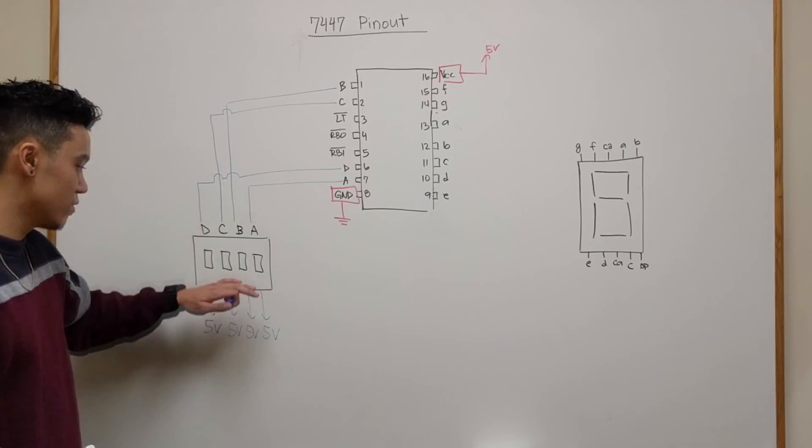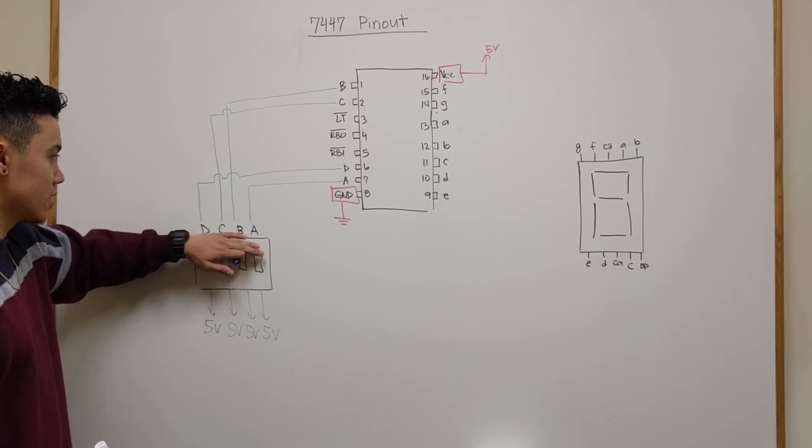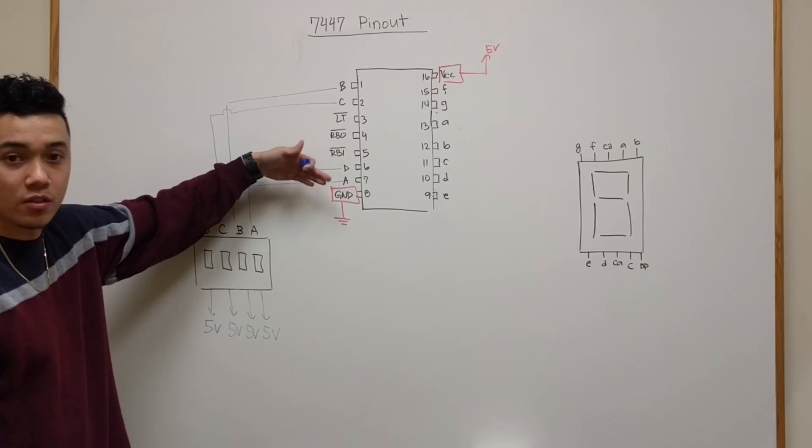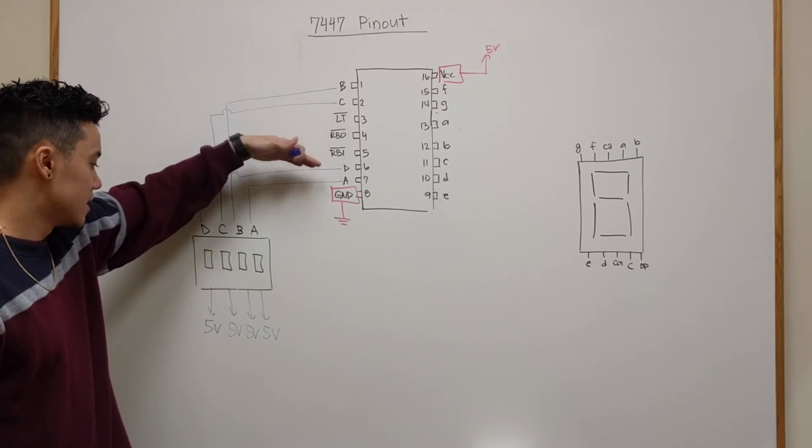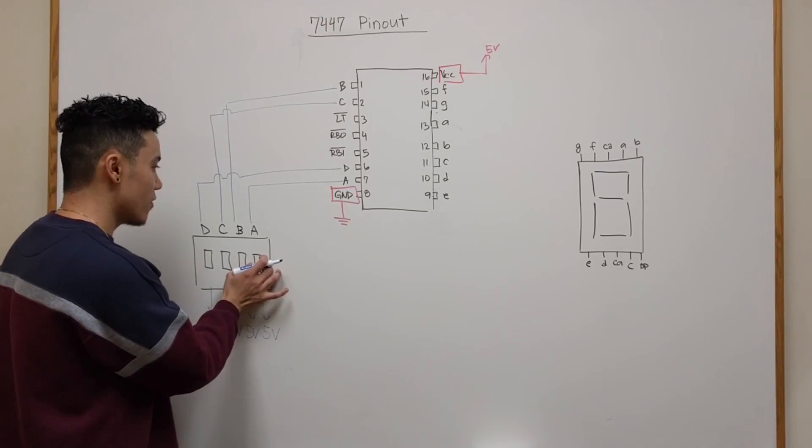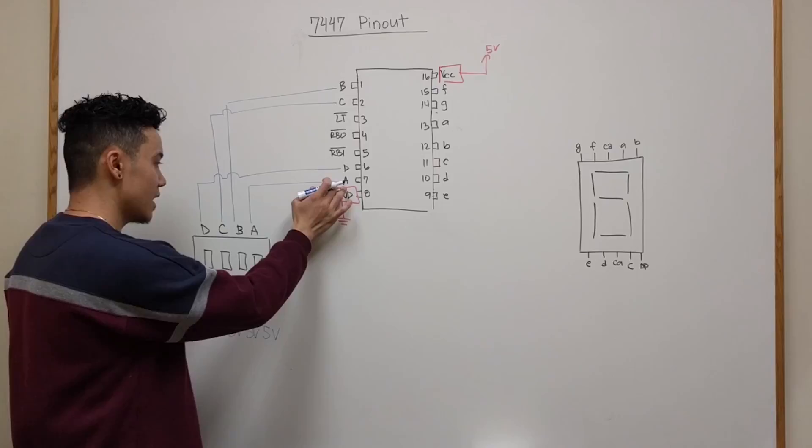So how this is going to work is when you flip on the switch you're going to get a high signal on your inputs A, B, C, and D. Let's take a look at what happens when the switch is off. When the switch is off these pins do not see any connections, so it's going to be left floating.